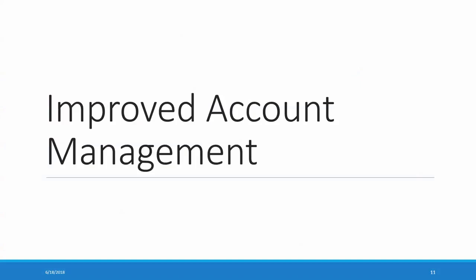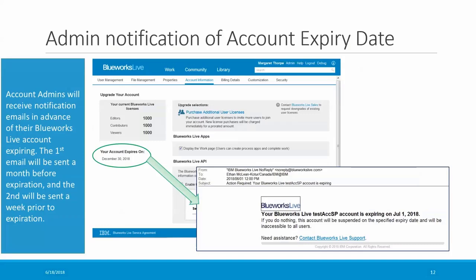Now let's look at some of the things we've done to make it easier to manage your BlueWorks Live account. If you lose track of when your account subscription needs to be renewed, you can always find the expiration date on the Account Information tab of the Admin Console. With this release, you'll also receive proactive email notifications alerting you of your upcoming account expiration about 30 days and then again about 7 days prior to expiration. That notification will be sent to the account admins, so in case you receive one of those, you won't be surprised.